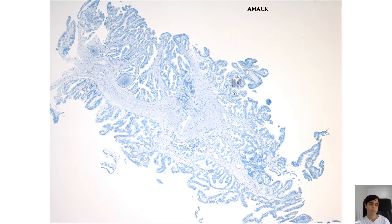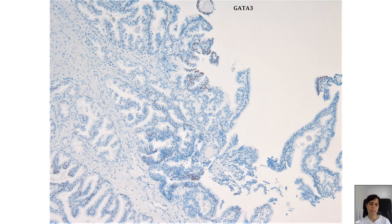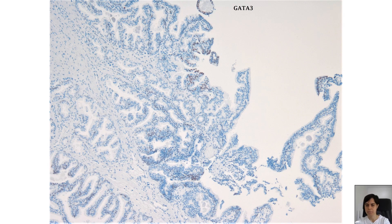AMACR is typically completely negative in these lesions. GATA-3 usually highlights some scattered benign urothelial cells — sometimes more, sometimes less — intermixed within these lesions.